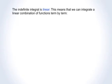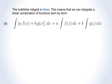An important property of integration is that it is linear. This means that we can integrate a linear combination of functions term by term. If f of x and g of x are two functions of x and a and b are two constants, then a times f of x plus b times g of x is a linear combination of f of x and g of x. We can pull constants out of the integral and distribute integrals over sums — that is what is meant by linearity.